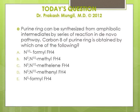The question is: purine ring can be synthesized from amphibolic intermediates by a series of reactions in de novo pathway. Carbon 8 of the purine ring is obtained by which one of the following? The purine ring has nine atoms, and biosynthesis involves getting individual atoms from each amphibolic intermediate to build a nine-atom purine ring.